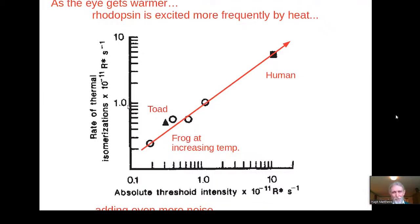Every time you make the toad sufficiently much warmer to increase the absolute threshold by a factor of 10, it does so because the rate of isomerization increases by a factor of 10 or so. And humans, at normal human body temperature, are much worse than toads at this, because we're warmer, and therefore rhodopsin is being excited by heat at a higher rate, even in complete darkness. How can we do better? How can a cat do better than a human?